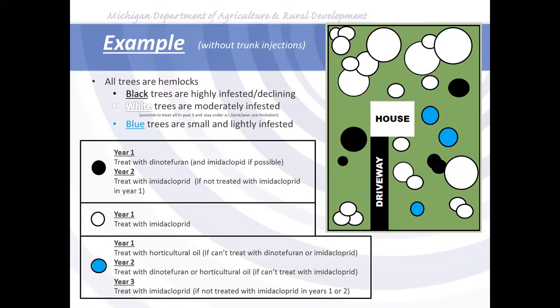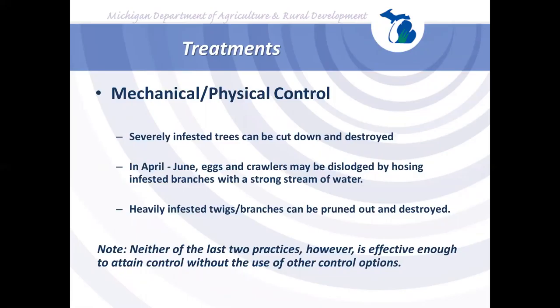Mechanical and physical control methods are available but less effective than chemical controls. A heavily infested tree can simply be cut down and burned or buried. On smaller trees, washing with water during the right season can knock insects to the ground, or heavily infested twigs and branches can be pruned and destroyed. However, these methods alone are not sufficient to control the problem and must be combined with other approaches.